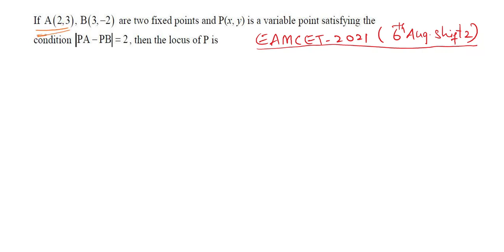Given A(2, 3) and B(3, -2) are two fixed points and P(x, y) is a variable point satisfying the condition |PA - PB| = 2. We need to find the locus of P.